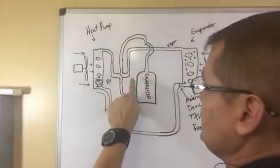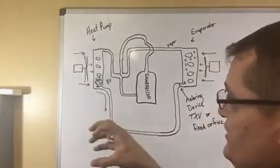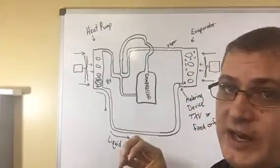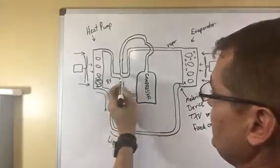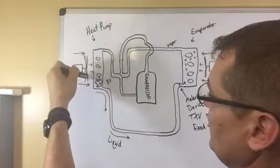This is how a reversing valve works. It just has a solenoid that shifts back and forth. So in cooling mode, the solenoid is shifted like this. So your hot gas comes out and feeds your outdoor coil.